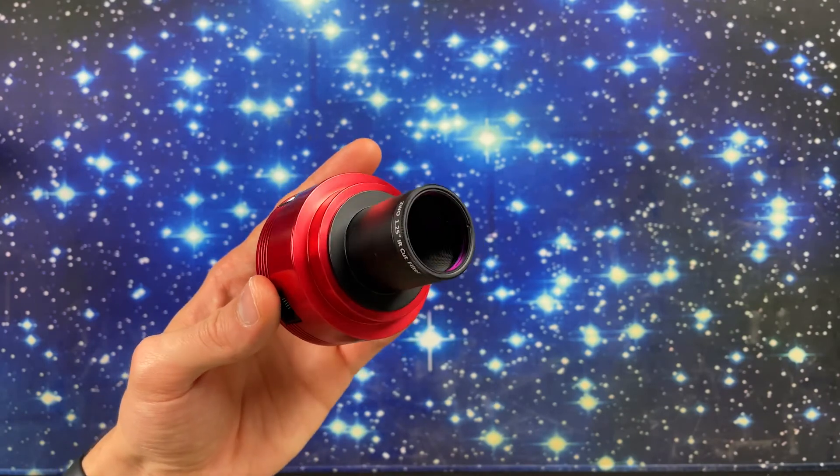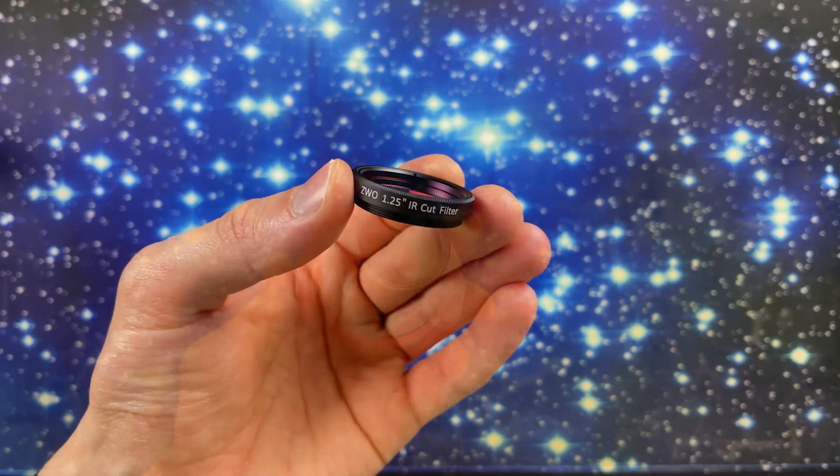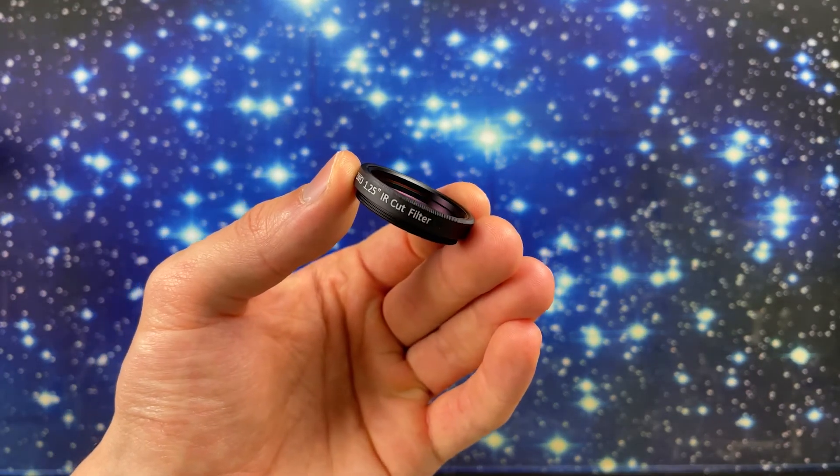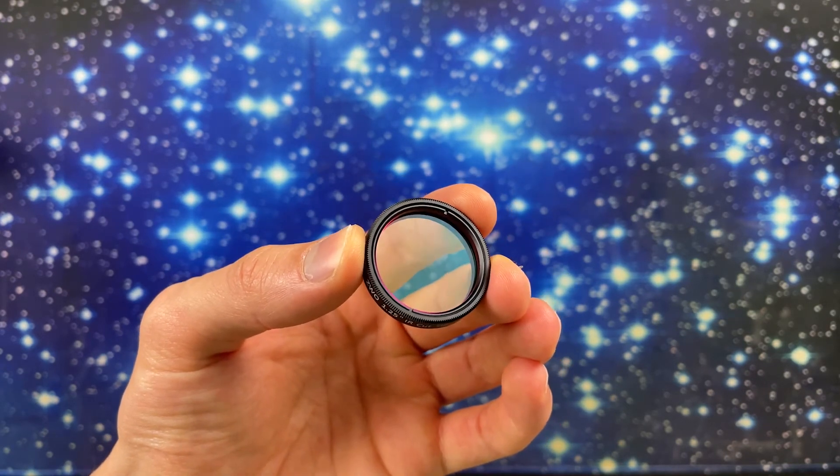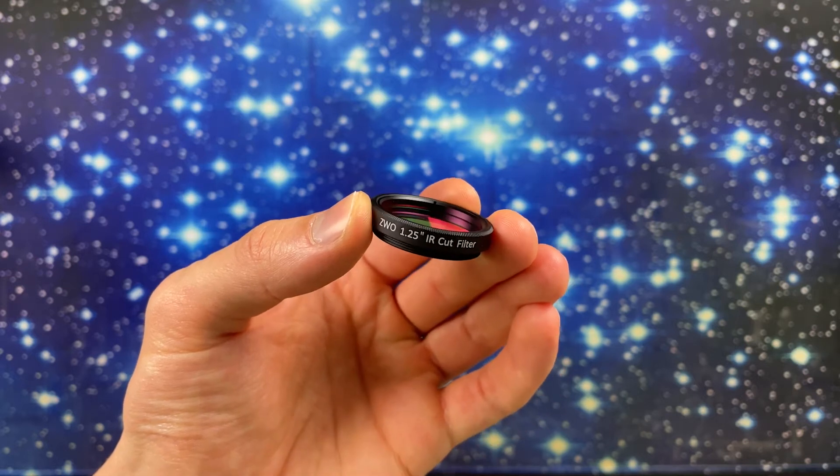Also in front of the camera I have ZWO UV-IR cut filter. The filter blocks infrared and ultraviolet light from reaching the sensor of the camera and as a result I can get sharper images.